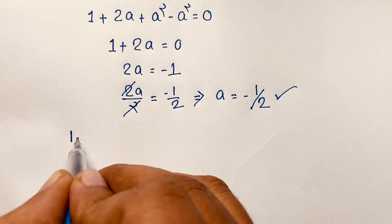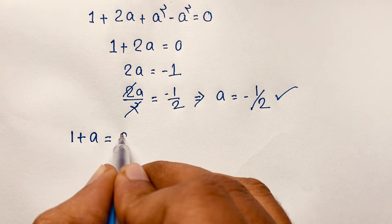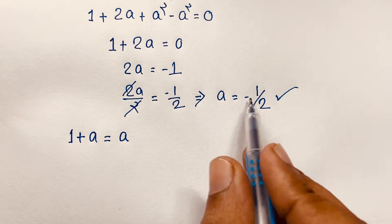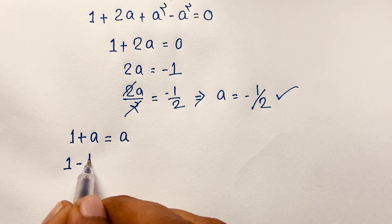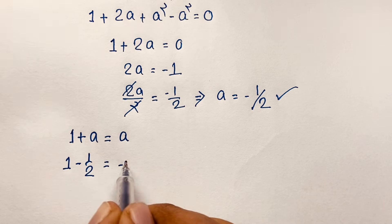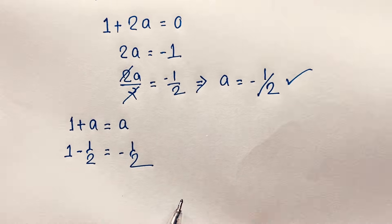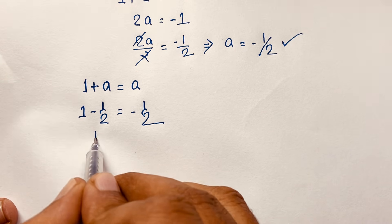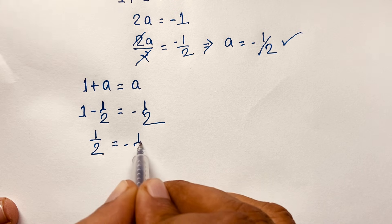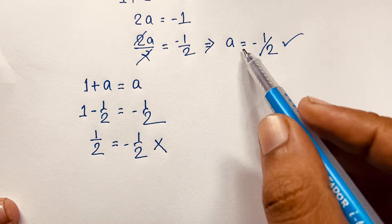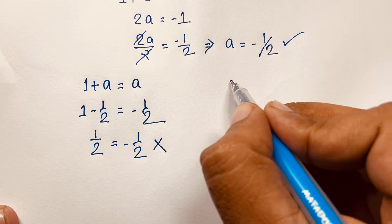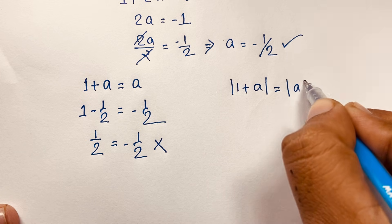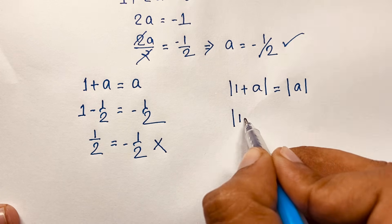Our question is 1 plus a equals a. With a equal to negative one-half: 1 minus one-half gives positive one-half on the left side, but the right side is negative one-half. Both sides are not equal, so a equals negative one-half does not satisfy the equation directly. However, if we consider 1 plus a and a as absolute values, then 1 minus a gives one-half equal to absolute value of negative one-half.